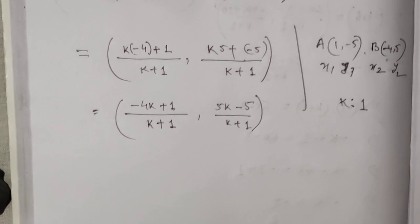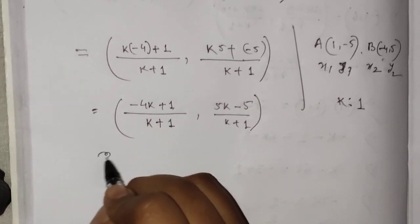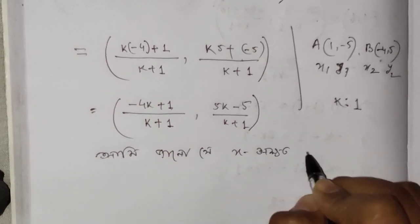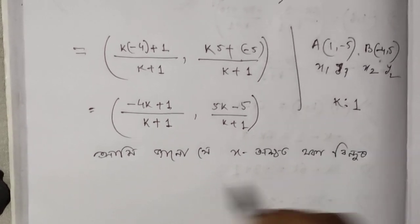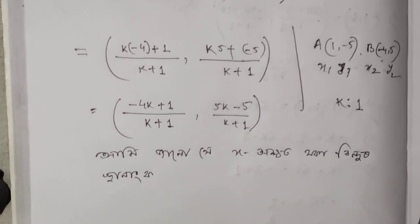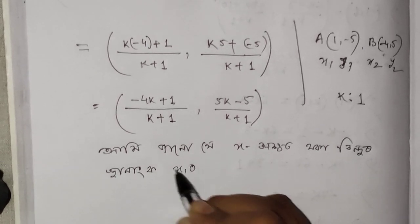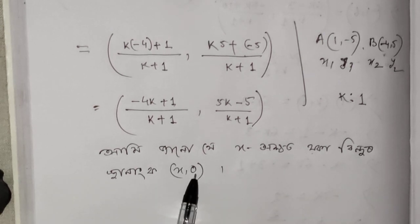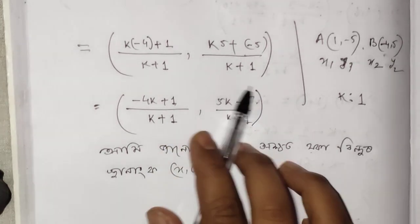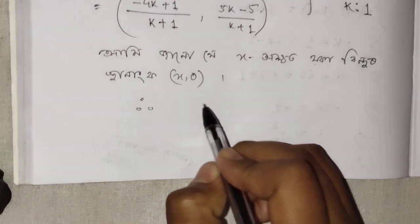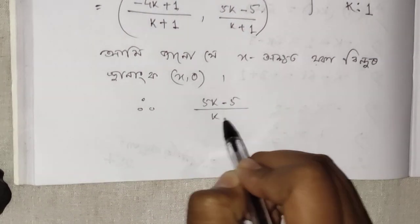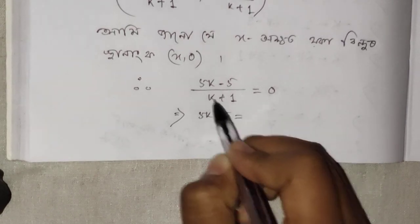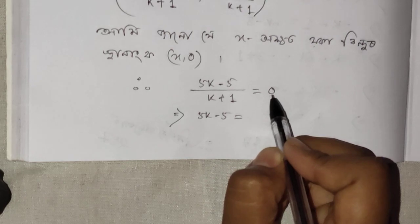Since the point lies on the x-axis, we know the x-coordinate of a point on the x-axis is zero. So we set x = 0. That means (-4k + 1) / (k + 1) = 0, which gives 5k - 5 = 0. Setting k + 1 equal to zero gives us our condition.